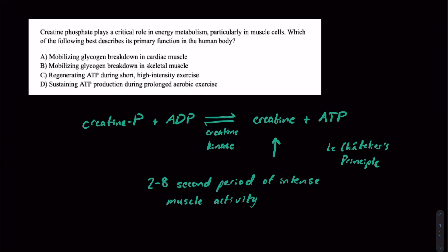So let's go through the answer choices. Mobilizing glycogen breakdown in cardiac muscle? Not really. Creatine phosphate is all about ATP here.